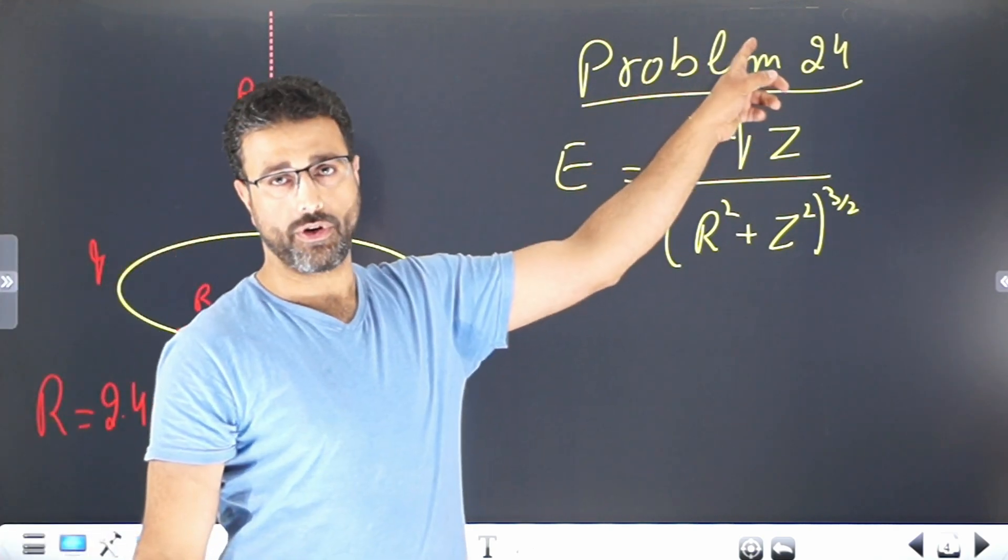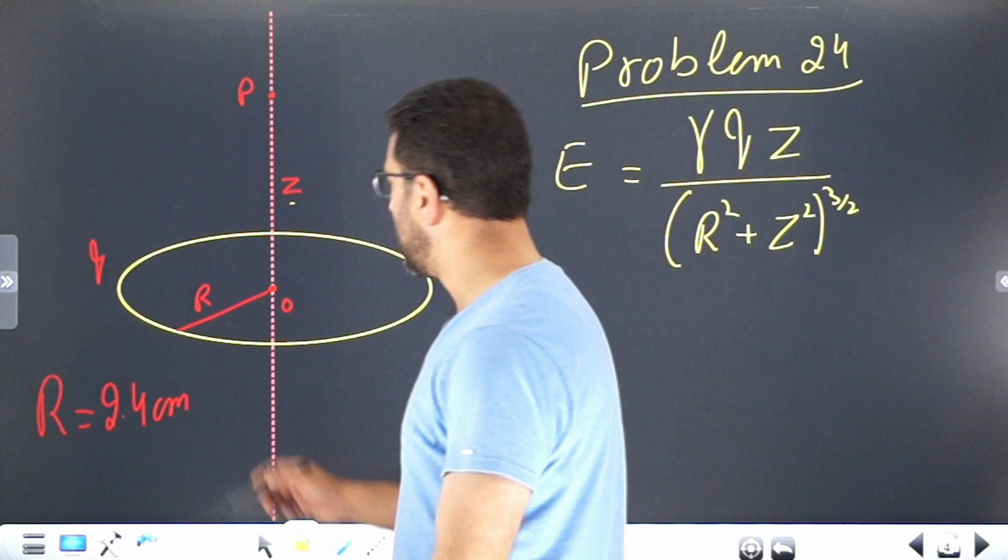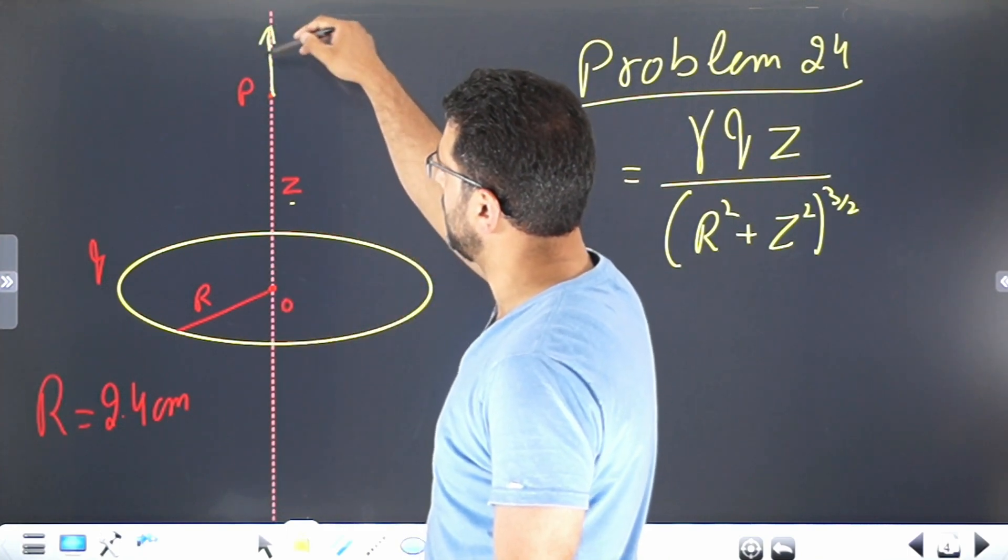From problem number 24, if the ring is positively charged, the direction is away from the center. If negatively charged, then towards the center.